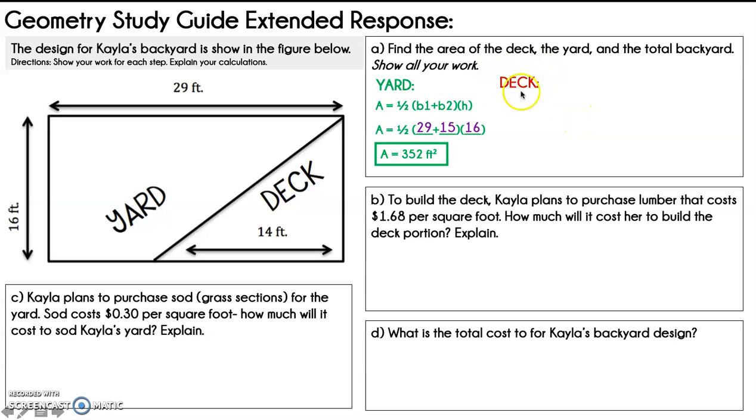Now we're going to take a look at the deck. The deck is a triangle, so we're going to use the formula area equals one-half times base times height. The base is 14, and our height is the exact same height as our trapezoid. So our height is from very tip top to very bottom, which is 16. So our area equals, I'm just going to plug that into my calculator, one-half times 14 times 16, which gives me 112 feet squared.